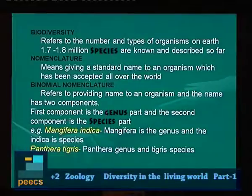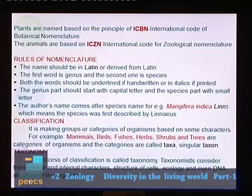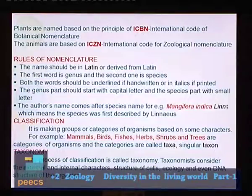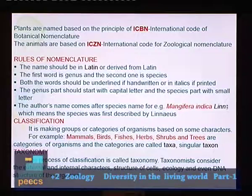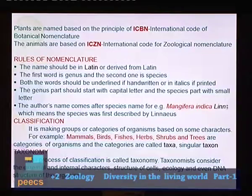Panthera tigris is the scientific name of the tiger — Panthera is the genus and tigris is the species. Plants are named based on ICBN (International Code of Botanical Nomenclature) and animals based on ICZN (International Code for Zoological Nomenclature). The binomial name should be in Latin or derived from Latin — for example, indica is derived from Latin.